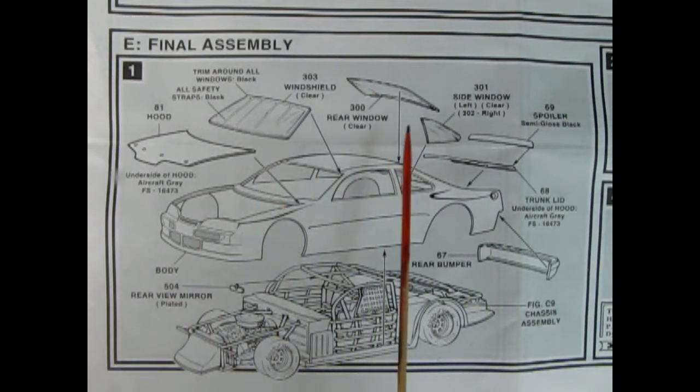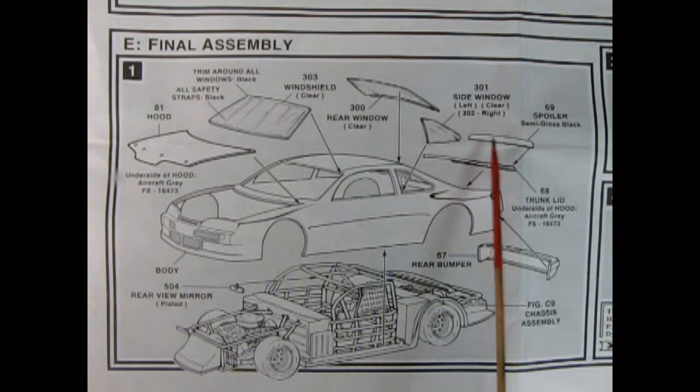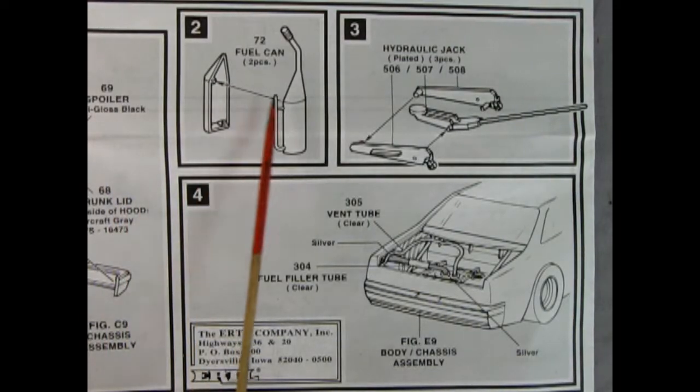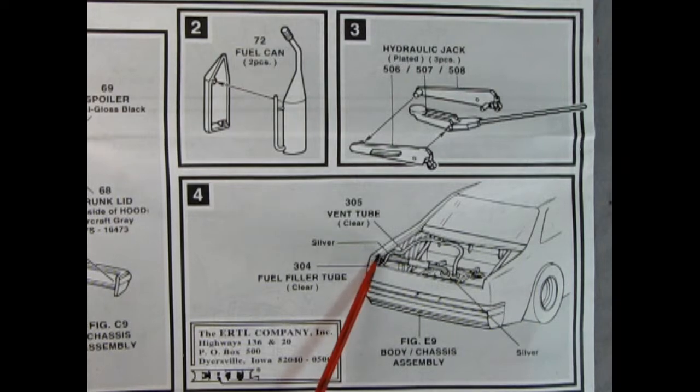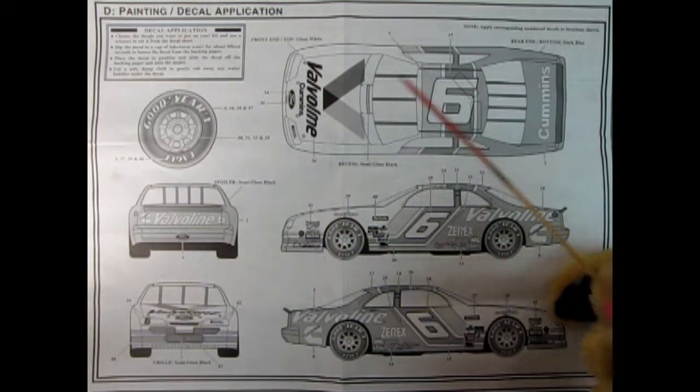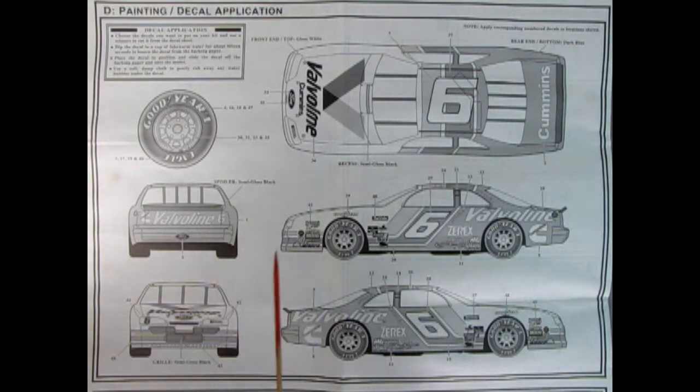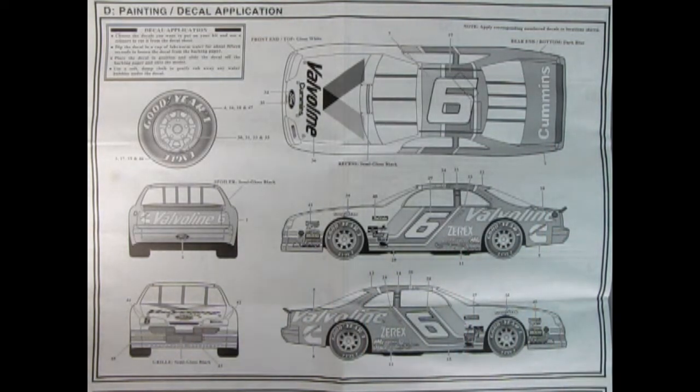Panel E shows our final assembly with our glass being glued in. And then our hood. Now the glass looks like it comes from the outside in, not from the back coming out. We have our spoiler here and our trunk lid, as well as our rear bumper. And the rear view mirror glues up onto our cage in here. And then all this would sandwich together. Panel two shows our fuel can being glued together. And then panel three, we get a hydraulic jack. Now these are some really cool accessories. And then this is something you really need, is the clear vent tube and the fuel filler tube, which glues in from that fuel filler hole and goes into the top of the tank. Now this panel here really takes up a lot of the instruction sheet. And as you can see, we've got our tires and how to paint them. And then all the decal placements.